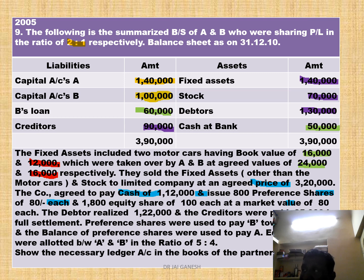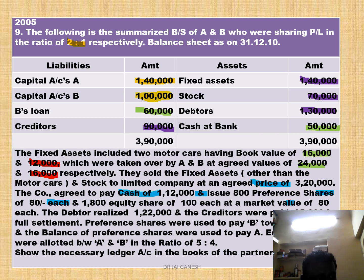Out of the total preference shares of Rs. 64,000, Rs. 60,000 is paid to B towards his loan and the remaining Rs. 4,000 is given to A. So B's loan is not paid by cash but by preference shares. The remaining balance of preference shares goes to A.